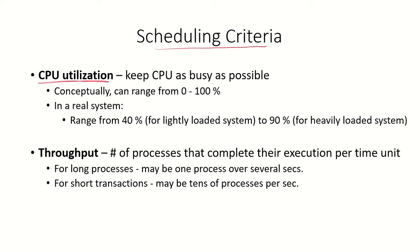One of them is CPU utilization — that is, is the algorithm being used keeping the CPU as busy as possible? Theoretically, CPU utilization can range from 0 to 100 percent, where zero means the CPU is sitting idle and 100 percent means it is being used all the time. In a real system it actually ranges from 40 percent for a lightly loaded system to 90 percent for a heavily loaded system.